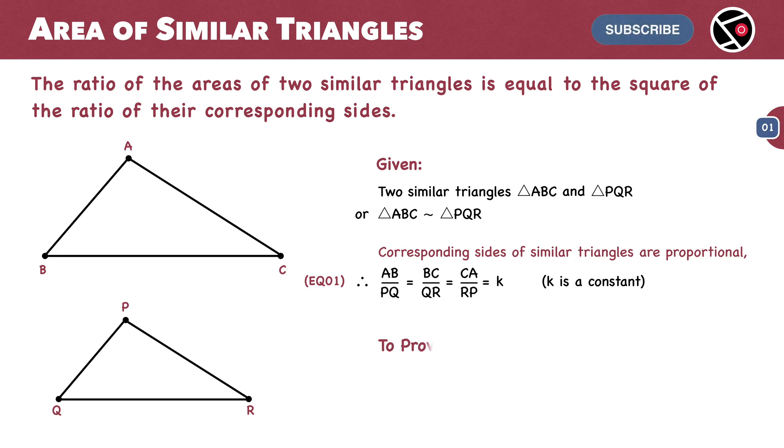We have to prove that the ratio of area of triangle ABC to area of triangle PQR equals K square. K is the ratio that we defined earlier.